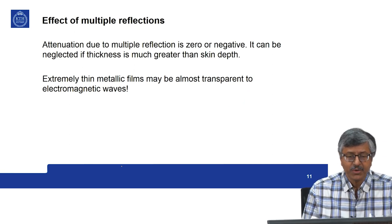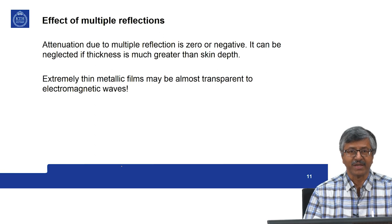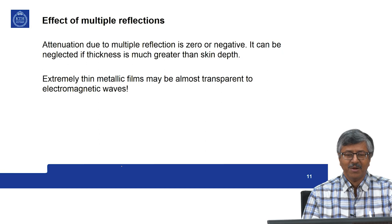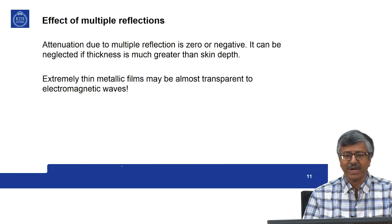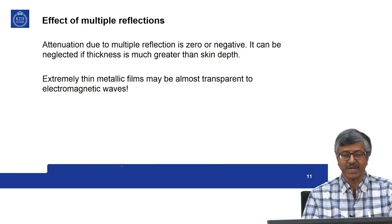Attenuation due to multiple reflection is zero or negative. It can be neglected if thickness is much greater than skin depth. Extremely thin metallic films may be almost transparent to electromagnetic waves. While thin shields appear effective when considering reflection or absorption alone, including multiple reflection phenomena shows it can destroy many of the beneficial effects of reflection. Very thin metallic films may be almost transparent to electromagnetic waves.